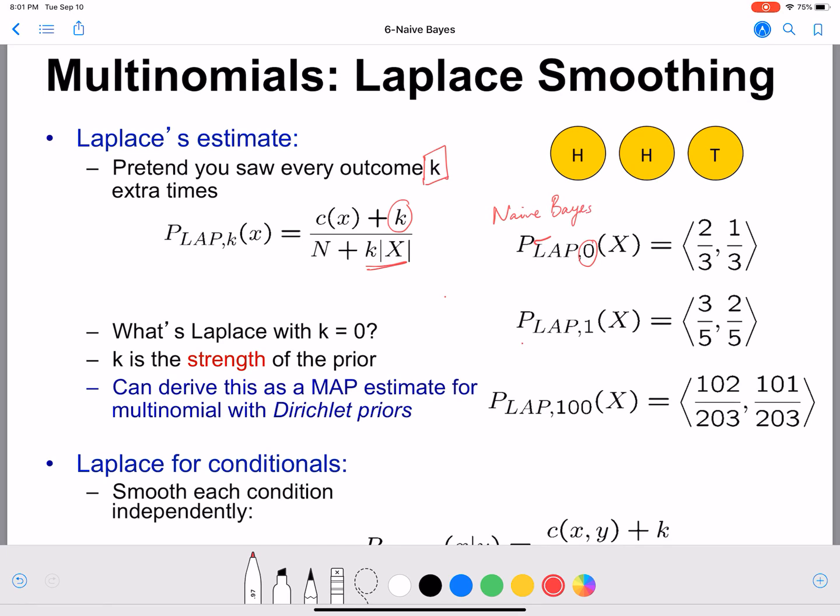Here we can see that is nothing but two heads out of three total tosses, so we have 2/3 and 1/3. We are counting the number of heads by the total number of tosses, number of tails by total number of tosses.